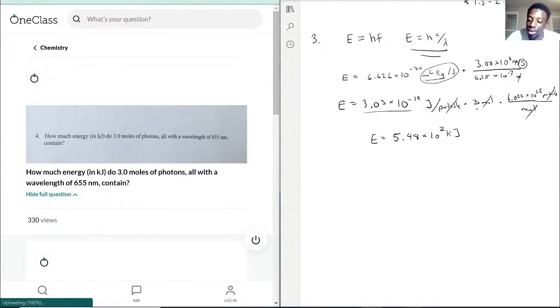And the reason why I put kilojoules, because the actual number I got was 548 and some number less than 4, because I rounded up. And then I just moved the decimal once I got to the 10 to the 2. So this right here is the energy produced by 3 moles of photons with a wavelength of 655 nanometers.